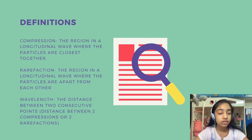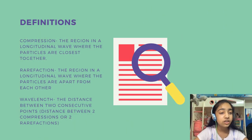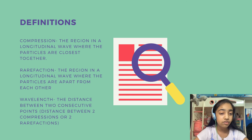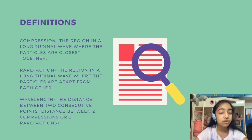So the proper definitions: Compression is the region in a longitudinal wave where the particles are the closest. Rarefaction is the region in a longitudinal wave where the particles are apart from each other. Wavelength is the distance between two consecutive points — the distance between two compressions or two rarefactions.